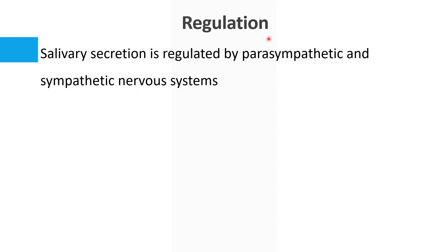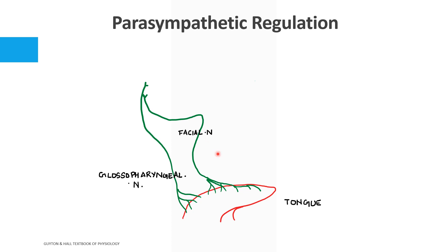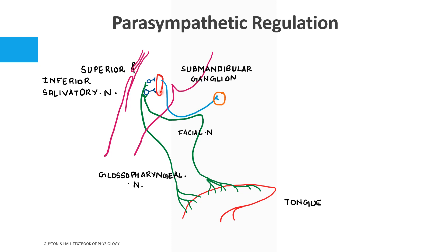Salivary secretion is regulated by the parasympathetic and sympathetic nervous system, of which the parasympathetic has the major role. Taste sensation from the tongue is carried by two important nerves: the facial nerve and the glossopharyngeal nerve. From the anterior two-thirds of the tongue, taste impulses are carried by the facial nerve, and from the posterior two-thirds by the glossopharyngeal nerve. These impulses reach the superior and inferior salivary nucleus located in the brainstem, which then sends impulses back via the facial and glossopharyngeal nerves to the salivary glands.